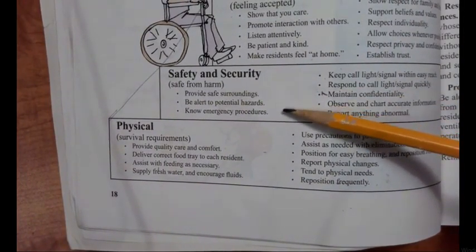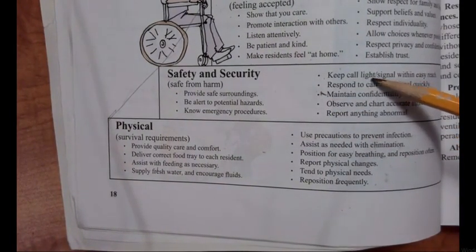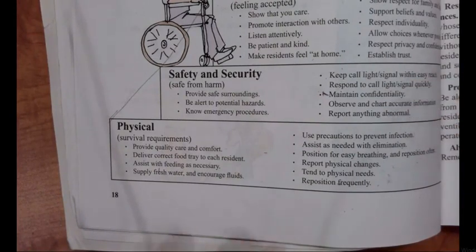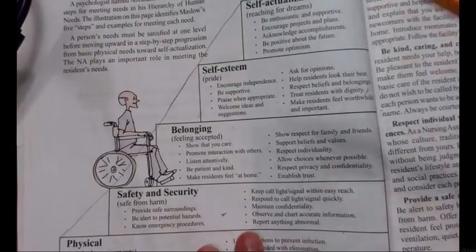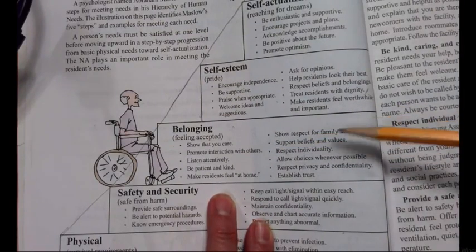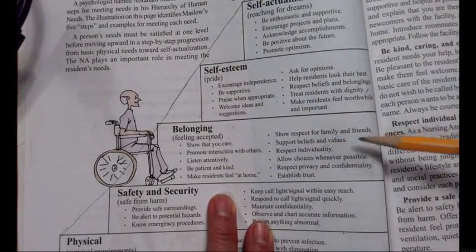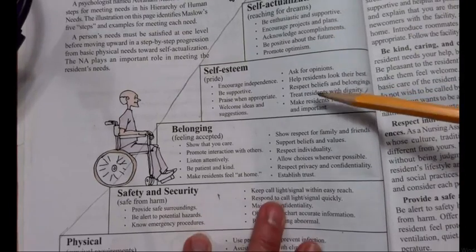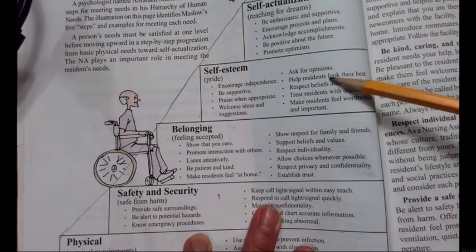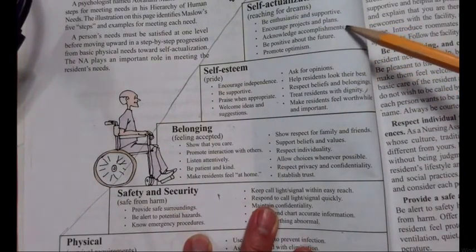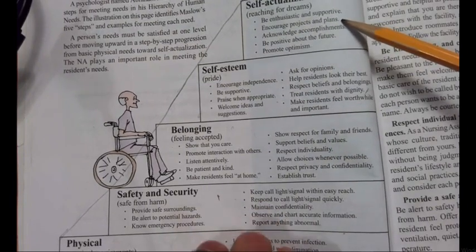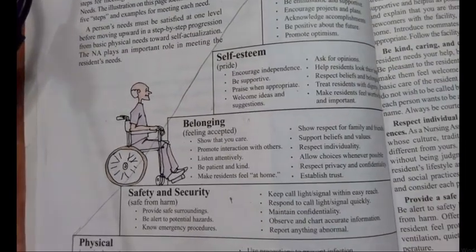For safety and security: know the emergency procedures — this is a big one — and keep a call light or signal light available. In assisted livings they often have medallions and lights. For belonging: show that you care, promote interactions with others, be patient and kind, maybe touching someone on their shoulder to show you care. For self-esteem: encourage their independence, praise them when appropriate, ask for their opinions and how they want things done. For self-actualization: be supportive and enthusiastic. If a patient had a hip replacement, say 'You're walking better today, let's go and try again.' Be positive about their current goal.